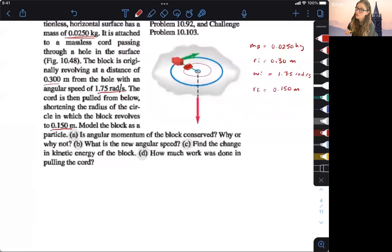So if there's a net torque, then it would take away from the angular momentum. But because there's no net torque on the block, we're pulling like straight through the rotational axis, it's going to still conserve the angular momentum.